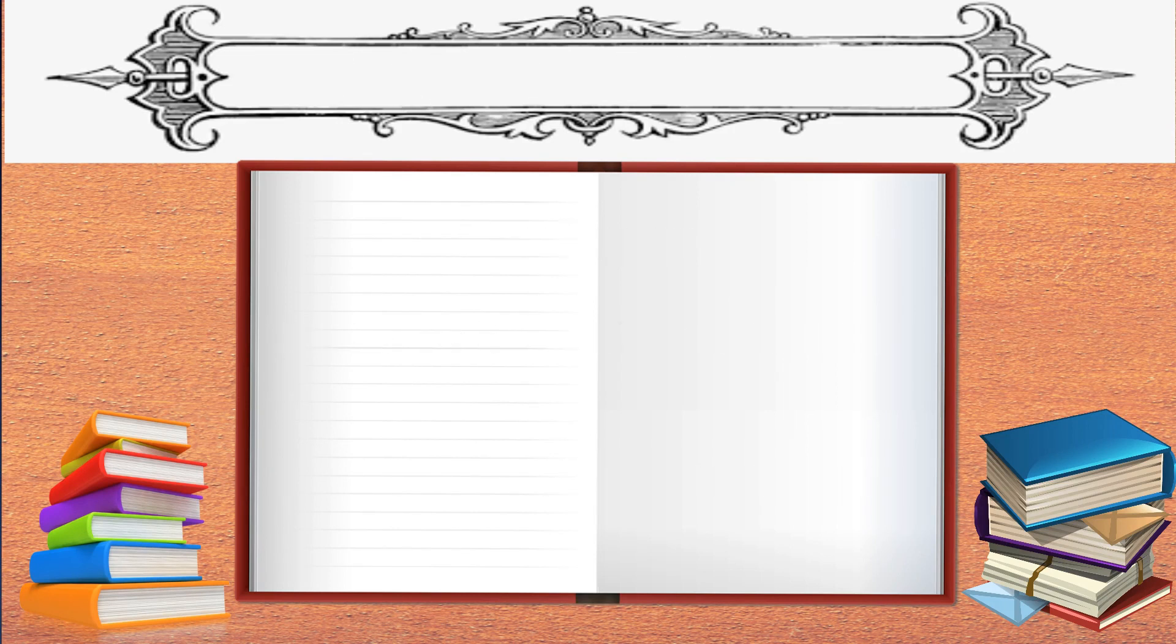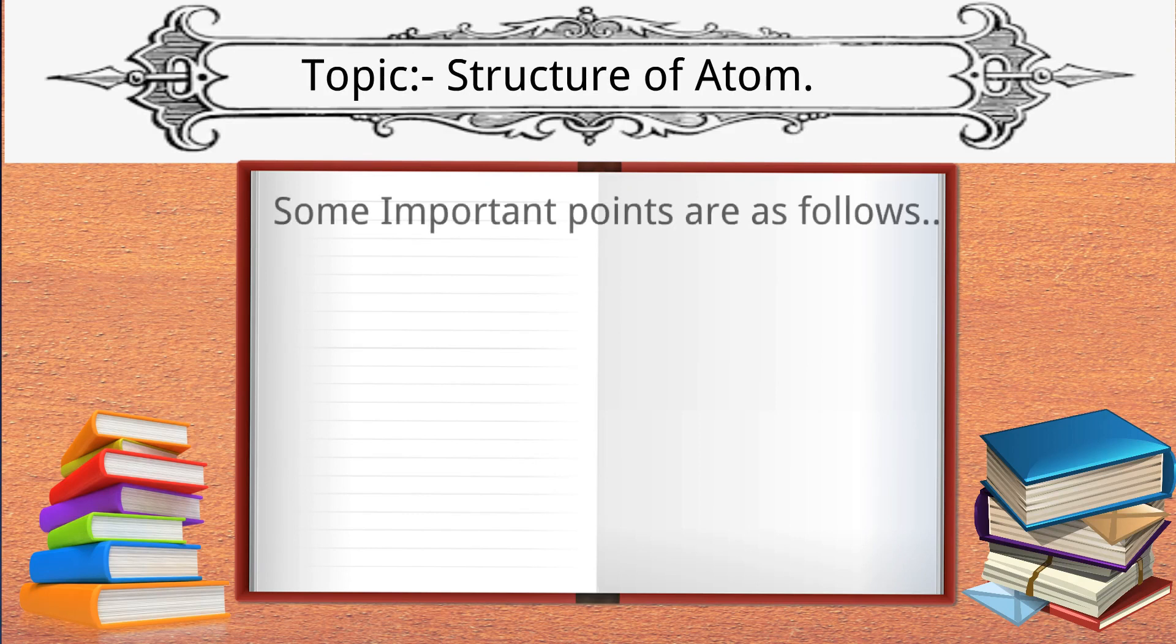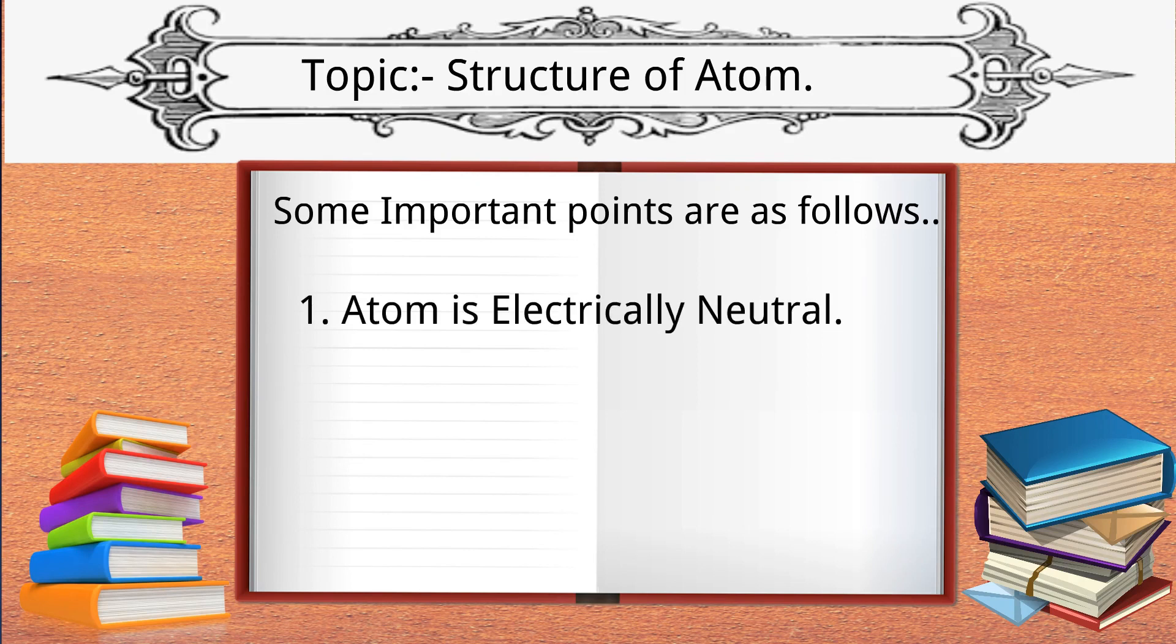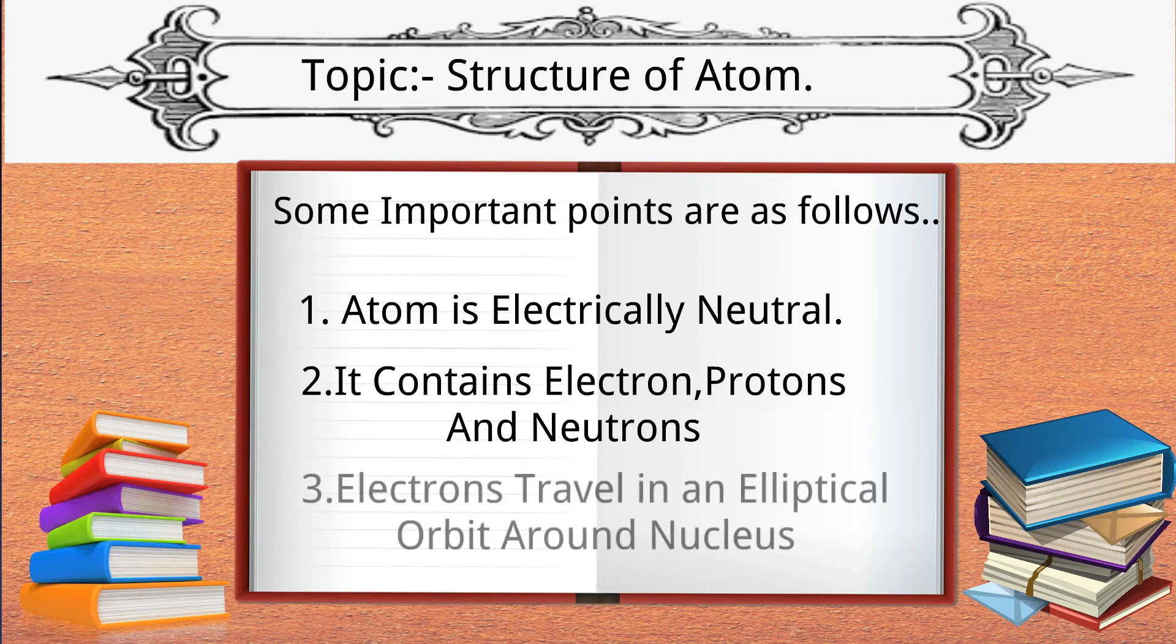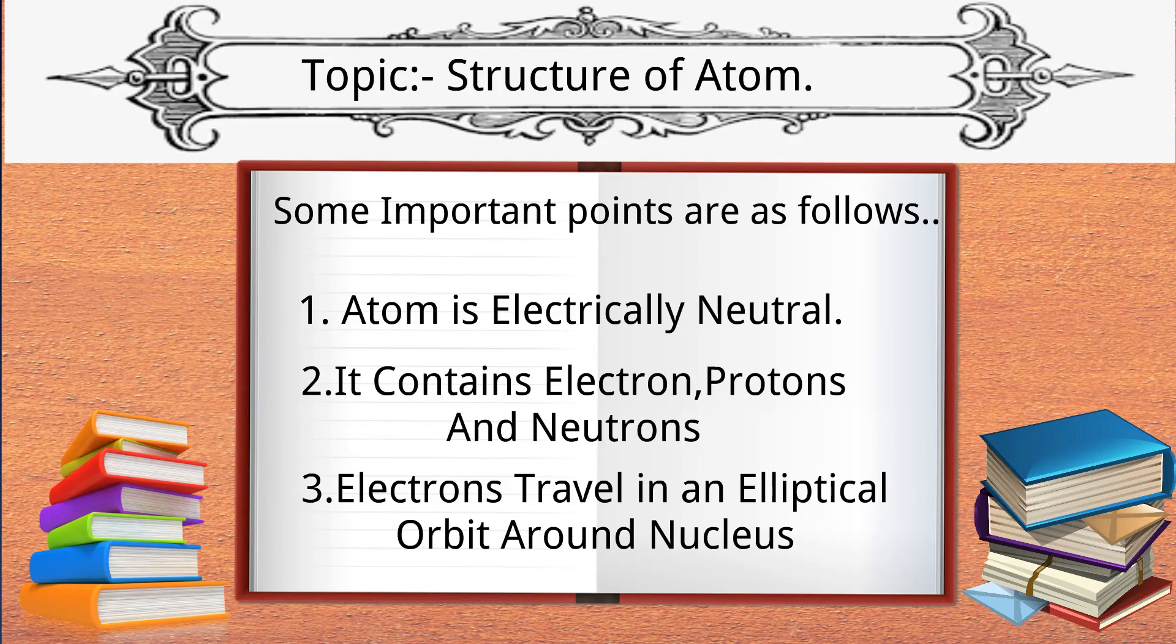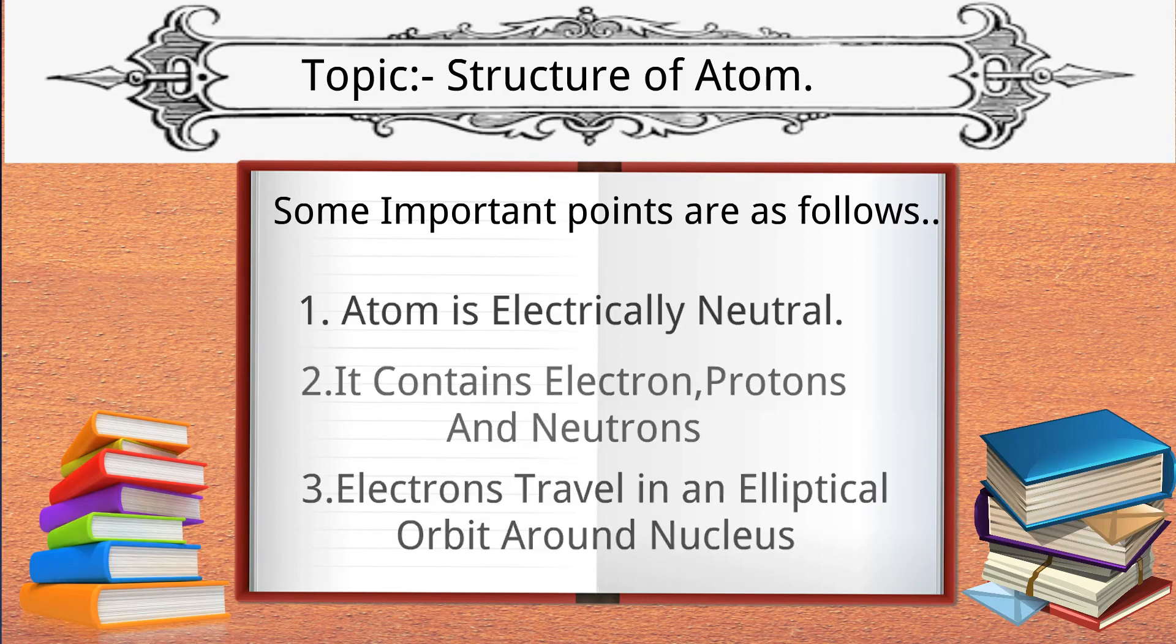Now let's see topic number two: Structure of Atom. Some of the important postulates of structure of atom are as follows: Atom is electrically neutral. It contains electrons, protons, and neutrons. Electrons travel in an elliptical orbit around nucleus, and protons provide an accessory force to balance the motion. Both protons and neutrons are present in the nucleus.